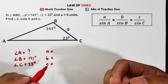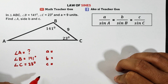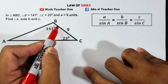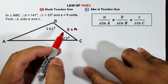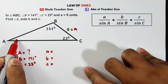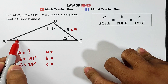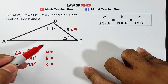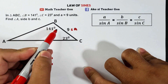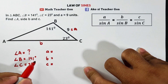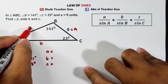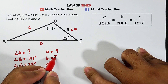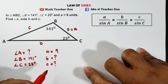Now, how do we determine the location of the three different sides? Our reference is the given angles. Since a is 9 units, this is side a. The basis is that side a is opposite to angle A. If this is angle A, automatically this is side a. Similarly, if this is angle B, automatically this is side b. And angle C gives us side c. So we have 9 for the value of a, and we are missing the values of side b and side c.